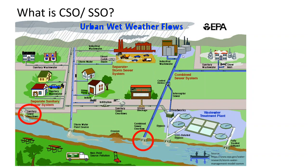The CSO conveys both sewage and stormwater through a single pipe system, and it directly discharges the combined flow in excess of the wastewater treatment plant capacity into the surface waters. The gray pipe here represents the SSO, the sanitary sewer overflow. It is meant to collect and convey sanitary wastewater to the wastewater treatment plant. However, during heavy rainfall, due to I&I — infiltration and inflows — the flows can exceed the peak capacity of the plant and may have to be discharged directly into the surface waters. Both CSO and SSO have a sewage component to them.